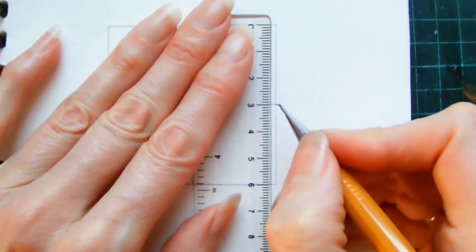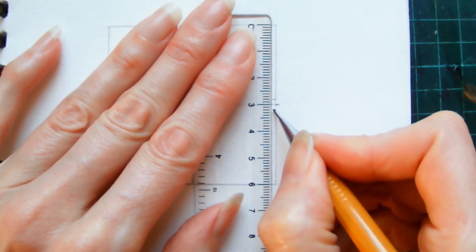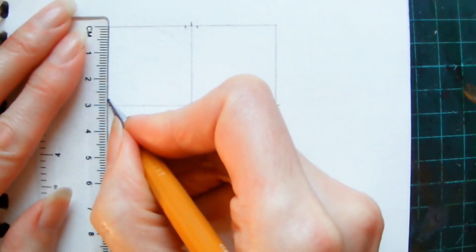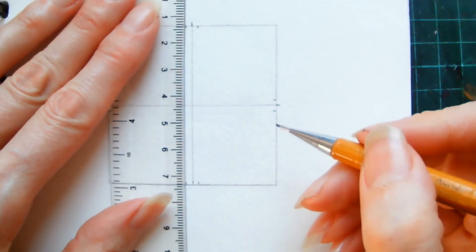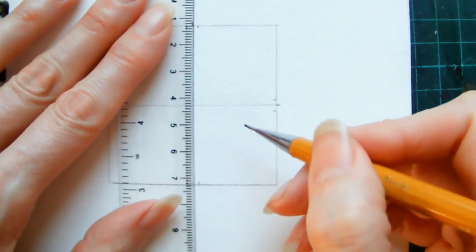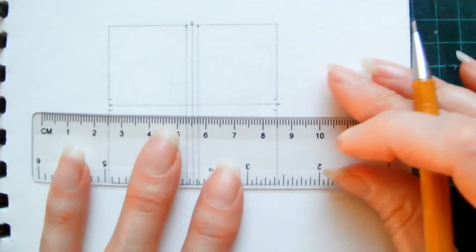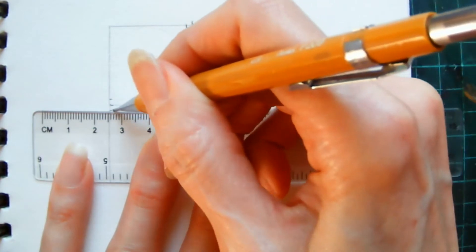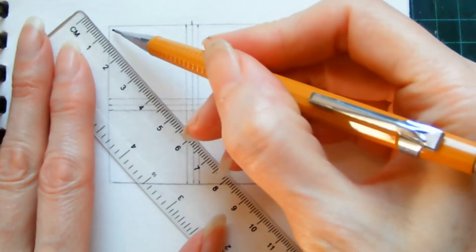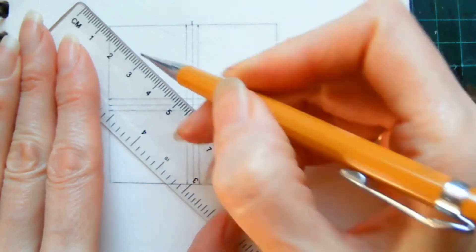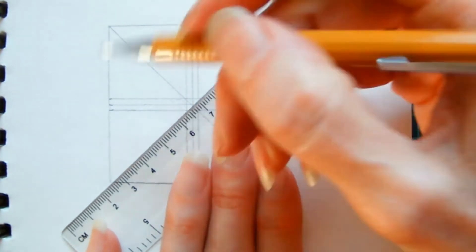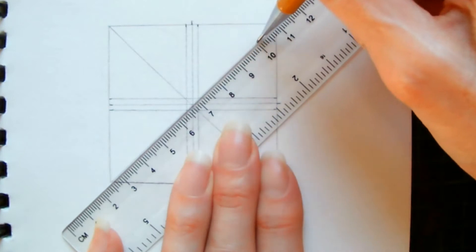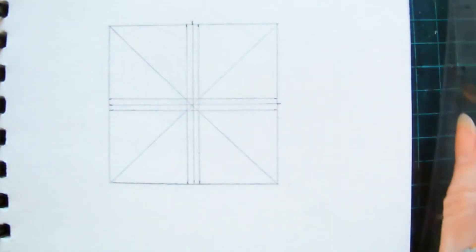And repeat on the edges, and then you're going to join all those lines up. And then the final guidelines we're going to put in are just a line from corner to corner. And that's all the guidelines set up.